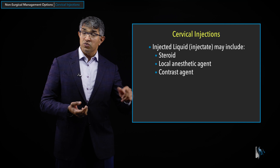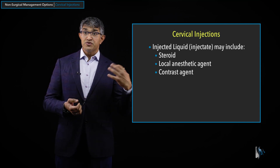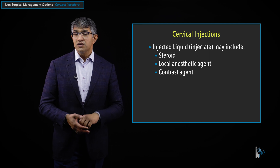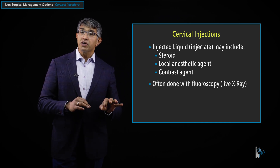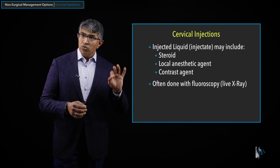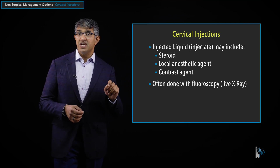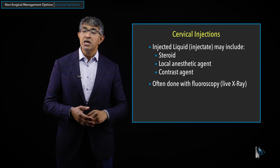Sometimes they will also include a local anesthetic agent, which helps numb the nerve right away. That is useful for diagnostic injections — for example, if I ask a pain management person to target the C6 nerve, they can put in a local anesthetic that won't last as long but can be quite diagnostic. The third ingredient is a contrast agent — something that looks dark on x-ray — so that when it's done with fluoroscopy, they can see the liquid on x-ray. Those are typically the three ingredients: steroid, anesthetic, and contrast agent, each coming in different types.